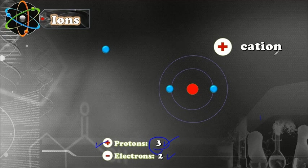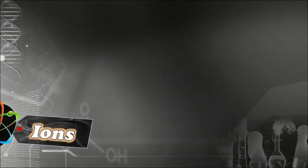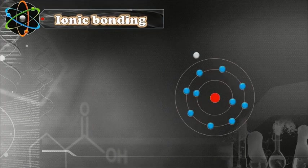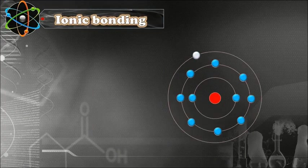This positive ion we call a cation. So this is how ions are formed, and this is what is meant by an ion.